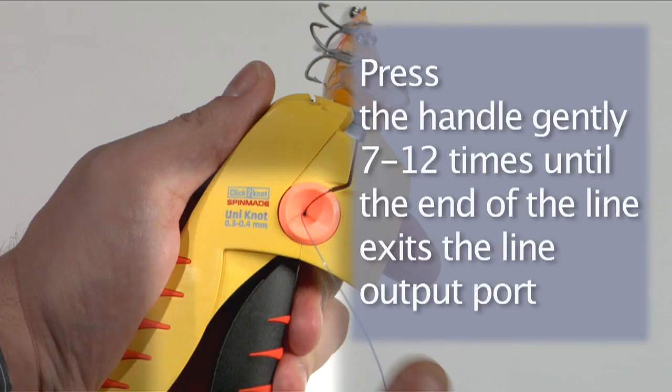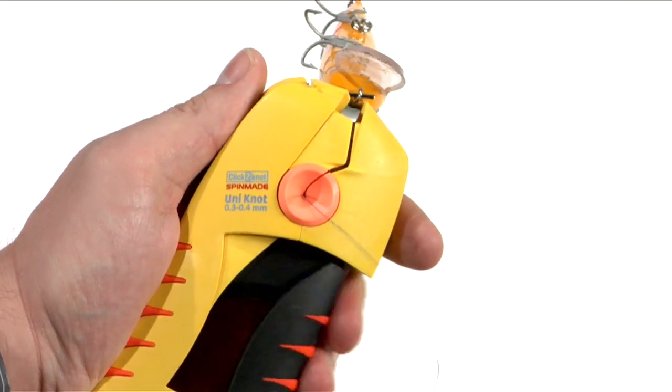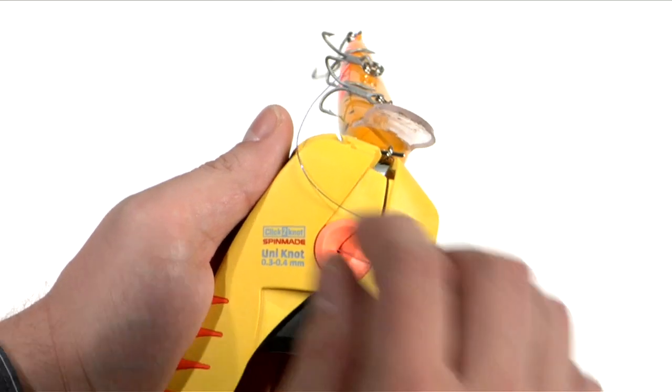Stick your fishing line into the feeder funnel, and then press gently 7 to 12 times on the handle until the line comes through the out port.